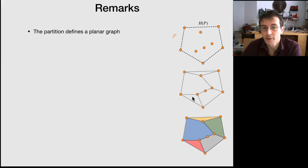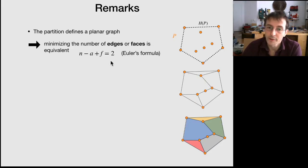The convex partition, the edges that define the partition, is a planar graph. So it satisfies what is called Euler's formula. And the number of vertices minus the number of edges plus the number of faces is equal to 2. And that shows that it's equivalent to minimize edges or faces, because both quantities are related by this equality.